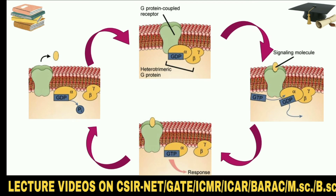GPCRs typically have seven membrane-spanning domains. In the absence of a signal molecule, the heterotrimeric G-protein complex is in an inactive GDP-bound form. On binding of a signal molecule to the receptor, there is a conformational change of the receptor and activation of the G-protein. This results from the exchange of GDP with GTP on the alpha subunit, after which alpha and beta-gamma dissociate. Both then interact with various targets such as enzymes and ion channels in the plasma membrane, which relay the signal onward.